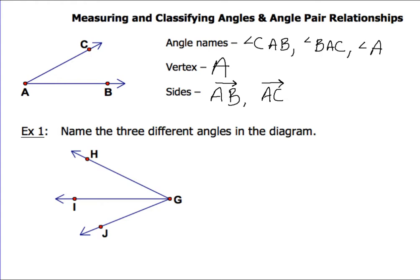Let's take a look at example one. It says name three different angles in the diagram. One of them is angle HGI. You could name that another way and call that same angle IGH. The second angle, we could call angle IGJ, or we could call it angle JGI. Either one of those ways would represent the same location.